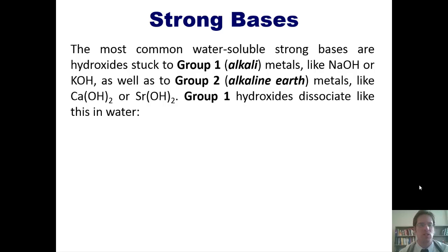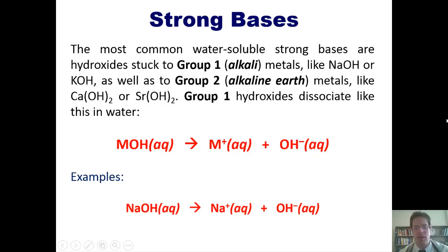Group 1 hydroxides dissociate like this in water, where M is my group 1 metal. It releases hydroxide in water and forms a metal cation. Examples include sodium hydroxide and potassium hydroxide, as well as others that I'm not showing here.